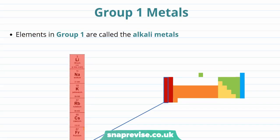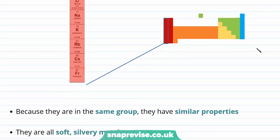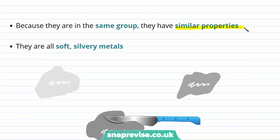If you've watched our video on the periodic table, you'll know that elements that lie in the same column or group of the periodic table tend to have similar properties. The elements in Group 1 of the periodic table, found on the far left hand side, are collectively called the alkali metals. You'll most commonly hear about the first three: lithium, sodium and potassium. Because these elements are in the same group, they have similar properties to each other.